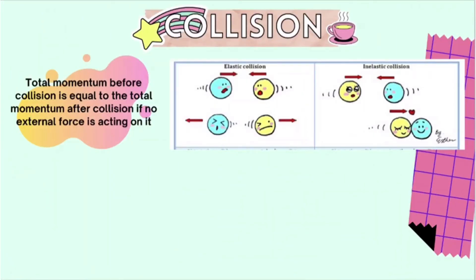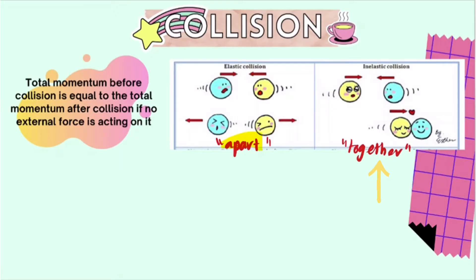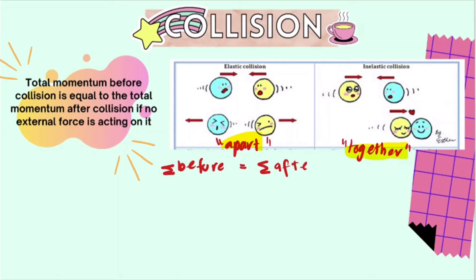Let's talk about collision. There are two types of collision: elastic collision and inelastic collision. For elastic collisions, the objects collide and then move apart, either in the same direction or in different directions — what's important is that the two objects move apart. For inelastic collisions, however, the objects collide and then move together with the same common velocity. An important thing to know is that the total momentum before the collision equals the total momentum after the collision if there is no external force.